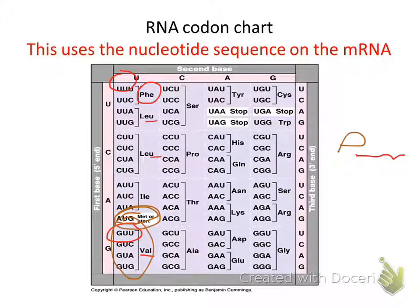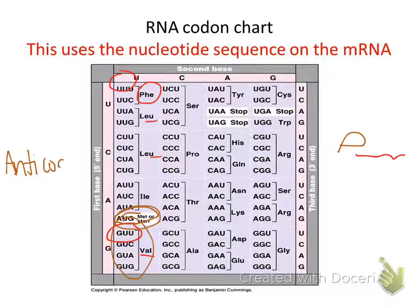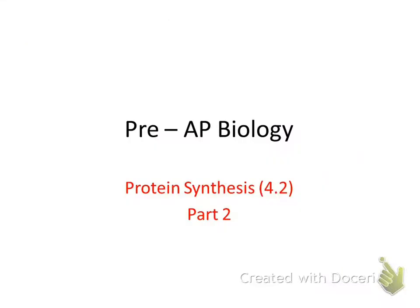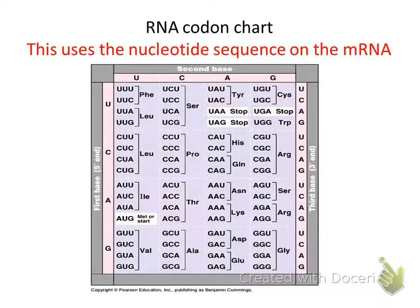The codon will match the anticodon sequence in translation. Inside the ribosome, it's going to match what's called the anticodon. The anticodon is on tRNA. Reading frame refers to a set of three consecutive nucleotides.